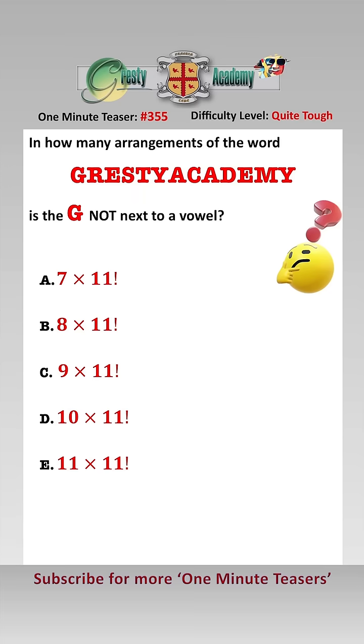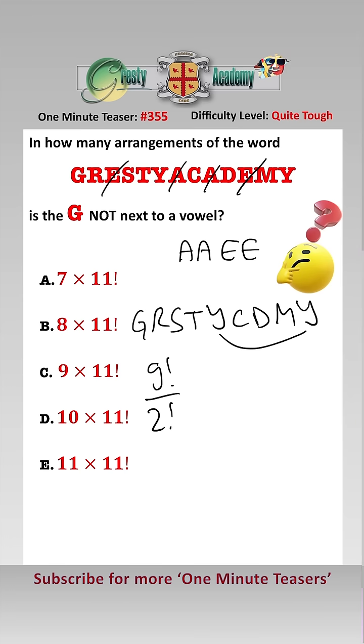We have 13 letters in Gresti Academy, of which we have two A's and two E's, so therefore we have four vowels: A, A, E, E. Looking just at the consonants, we have G, R, S, T, Y, C, D, M, Y. We have a duplicate Y, so arranging just the consonants we have 9 factorial over 2 factorial.